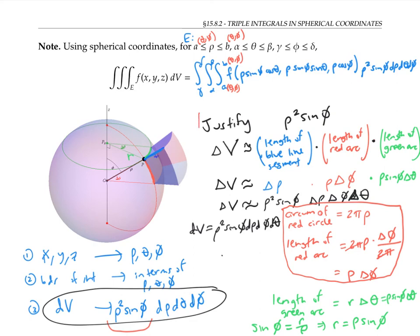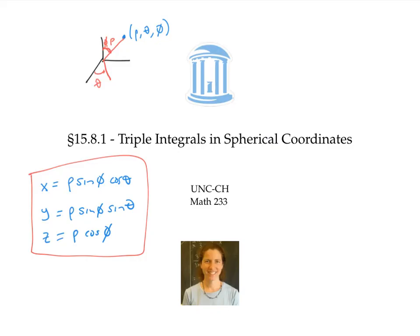So I've now given an informal justification of where rho squared sine phi comes from — it comes from estimating the size of a tiny spherical box. In this video, we integrated in spherical coordinates using the fact that dV equals rho squared sine phi times d rho d theta d phi. Be careful: it's easy to forget the rho squared sine phi, but you always have to include it.